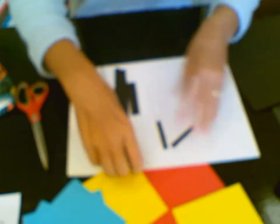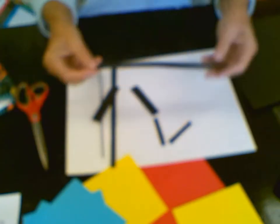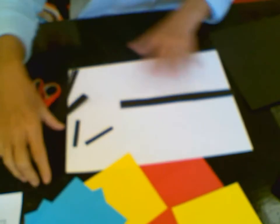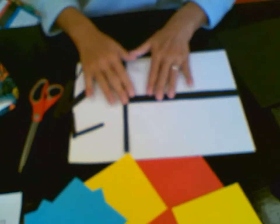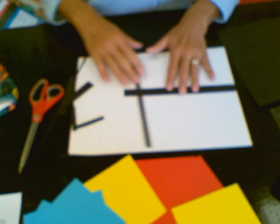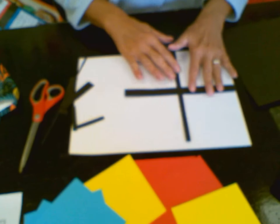So the first thing you're going to decide is where are you going to place these black strips to create some really interesting spaces to put our primary colors. And this is where Roz comes in. You want to reflect, you want to think about what exactly you're trying to create.